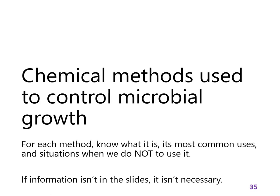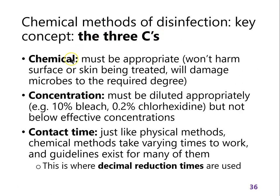As we get into chemical methods, the three C's become important — and you could apply these to physical methods as well. The three C's are: Chemical, Concentration, and Contact time. Chemical refers to which active ingredient you're using — did you choose the right one, is it powerful or weak? Concentration refers to how much of the active ingredient is present per volume, for example a 10% solution of bleach versus a 1% solution.